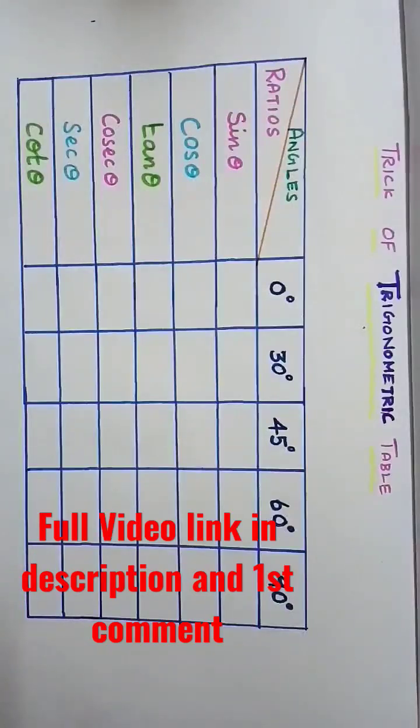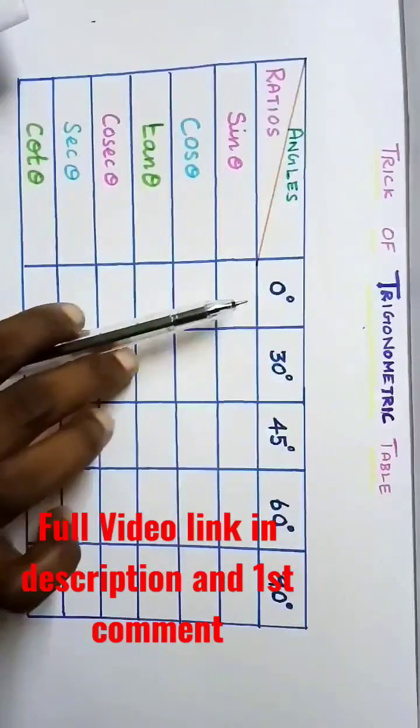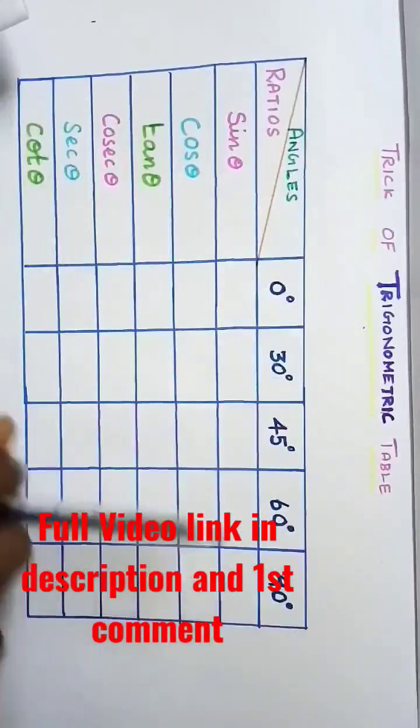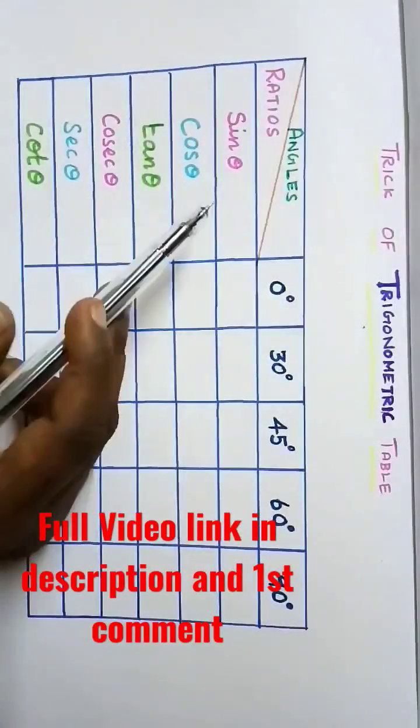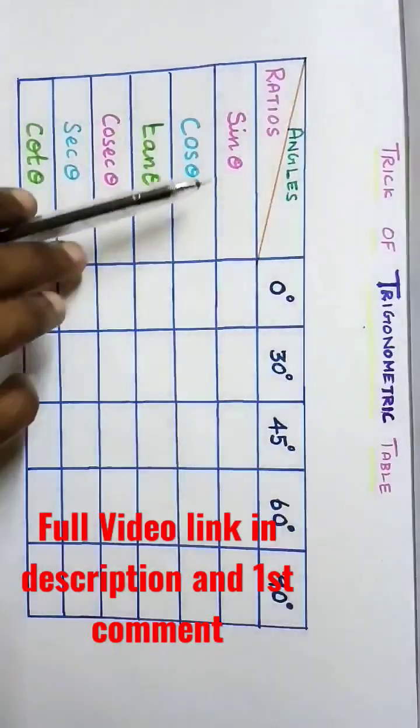In this video we are going to learn about how to create the table of trigonometric ratios. Here the angles are written horizontally in increasing order: 0 degree, 30 degree, 45 degree, 60 degree, and 90 degree. The ratios are written vertically: sine theta, cosine theta, tan theta, cosecant theta, secant theta, and cotangent theta.